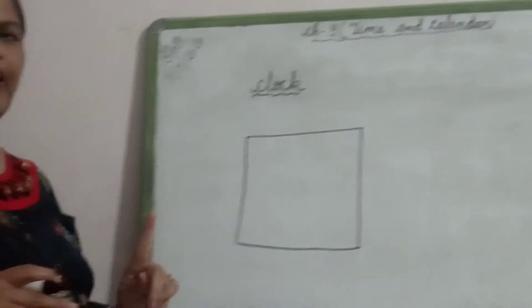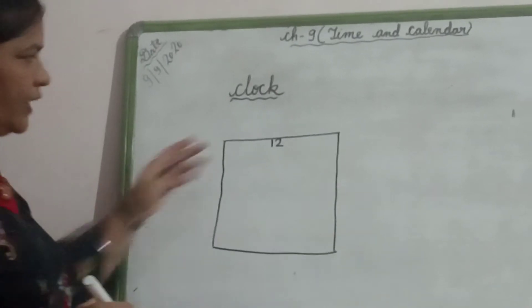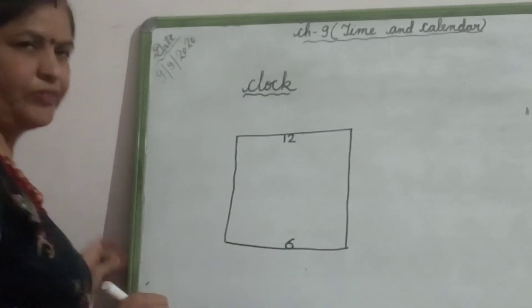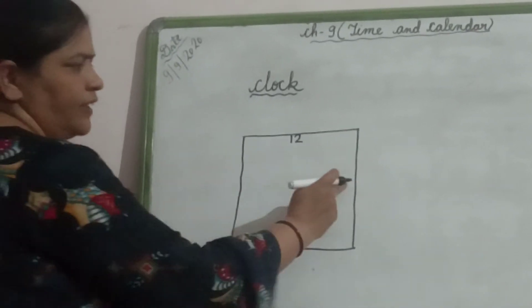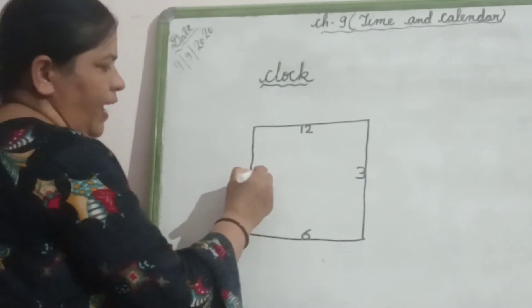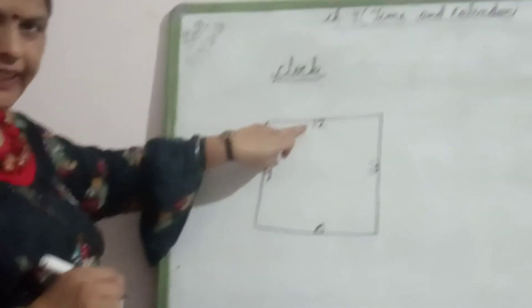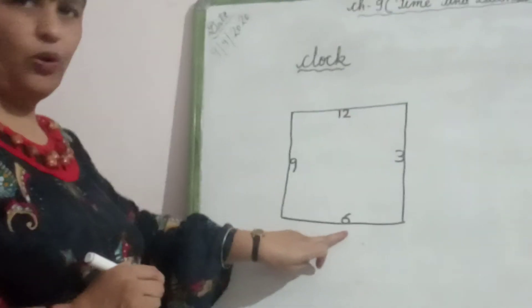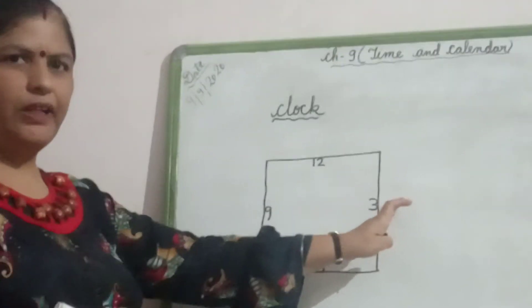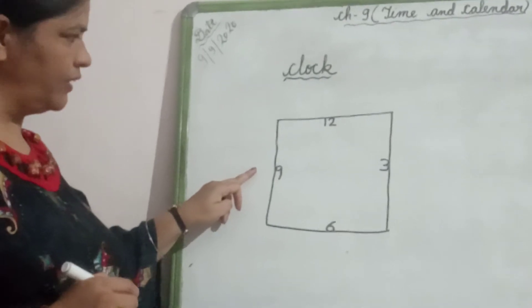Then, the first number we will write, that is number 12 on the top. Just below that, we will write number 6. On the right side, in the middle point, we will write number 3. And just in front of there, we will write number 9.